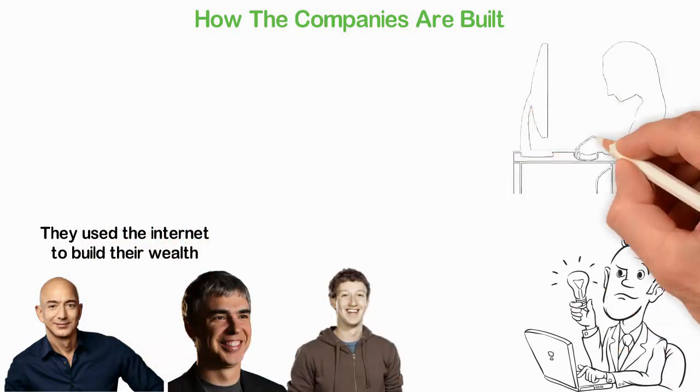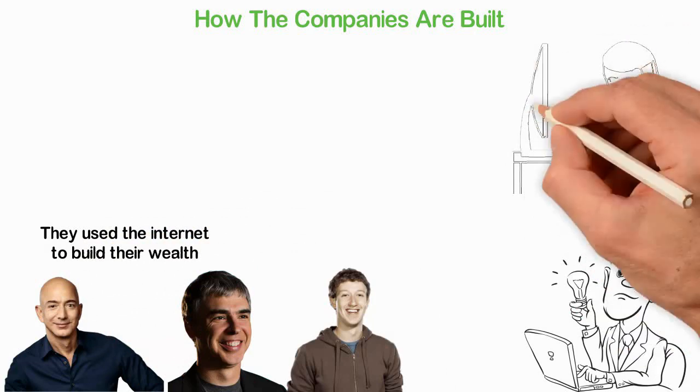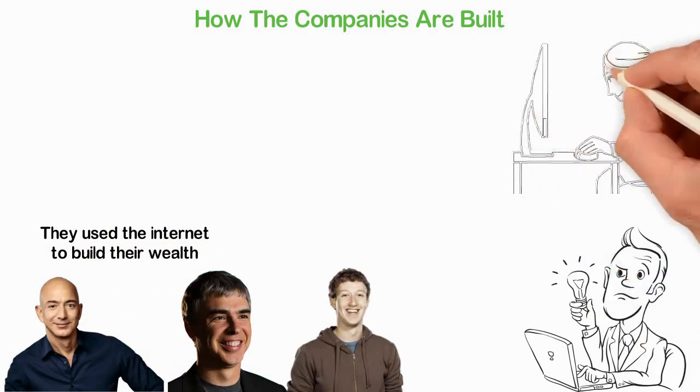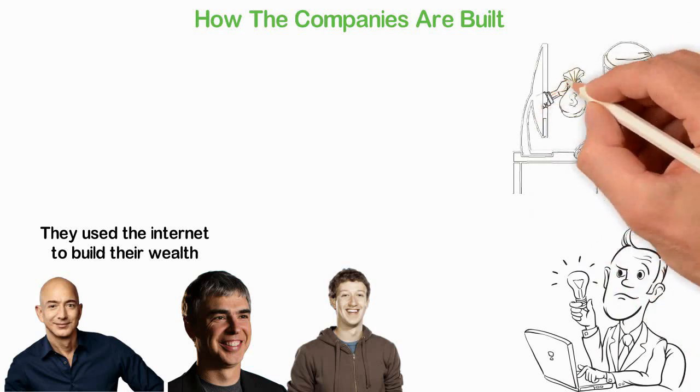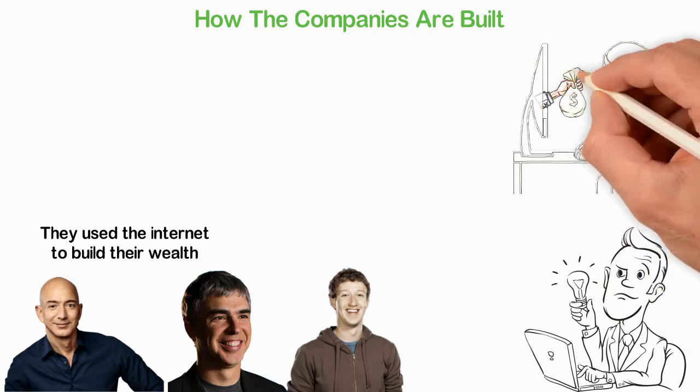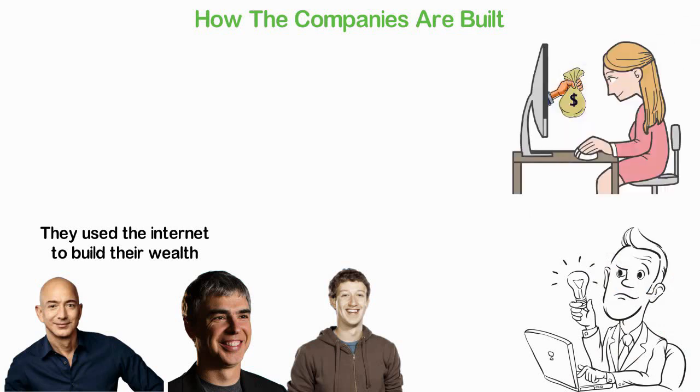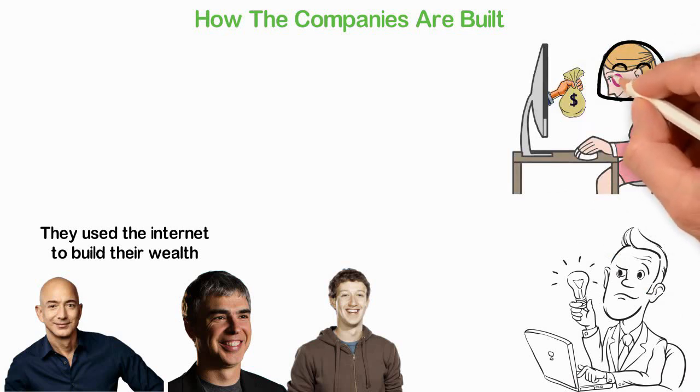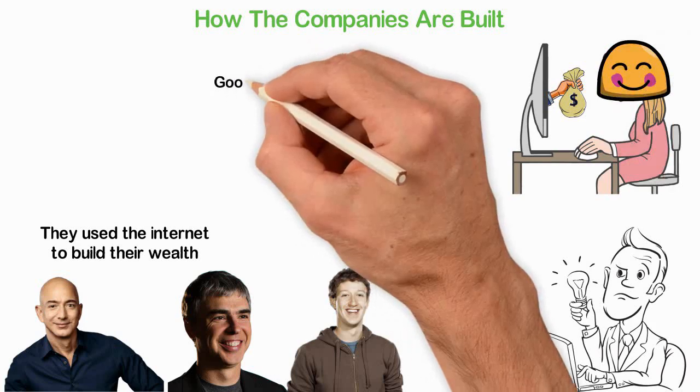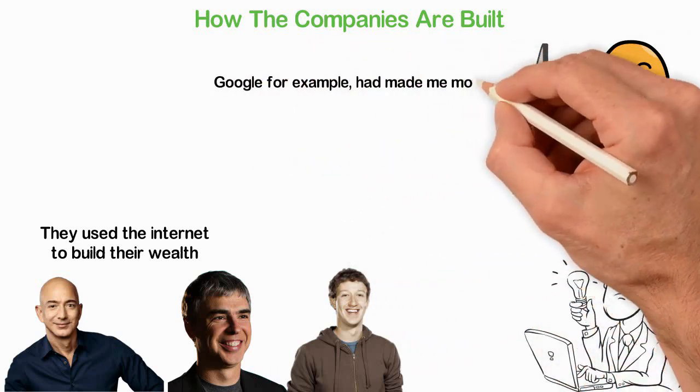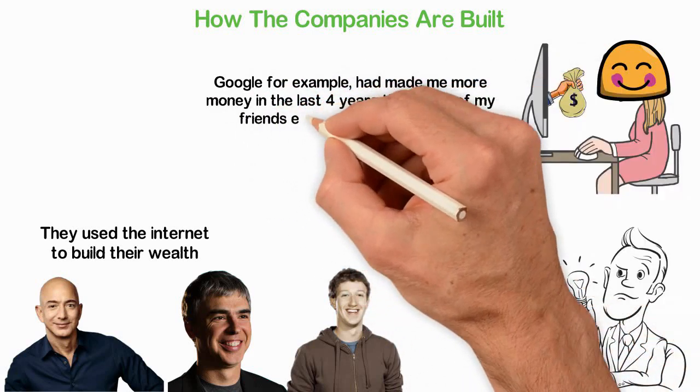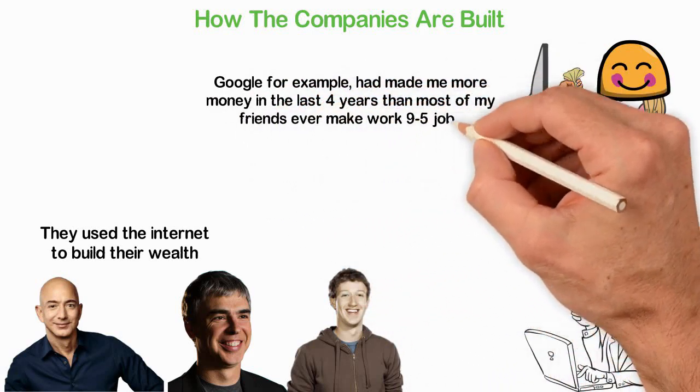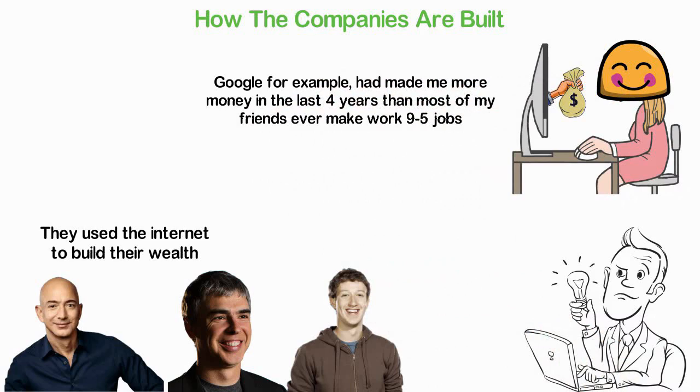Also think about this. IBM was the biggest computer manufacturer in the 1980s but Bill Gates struck a deal with IBM to sell the software of Microsoft on the hardware of IBM. Both parties used each other. Today, millions of smart people including myself are making tons of money from the search engines, social media and YouTube. For example, I don't own any share in Google and Google had made me more money in the last four years than most of my friends ever make working 9 to 5 jobs. In this case, I'm using Google and it's fine.